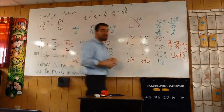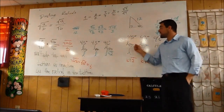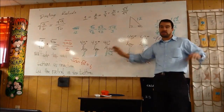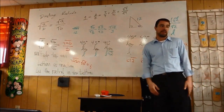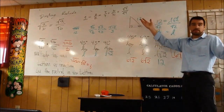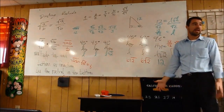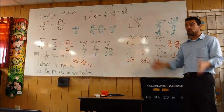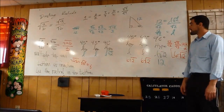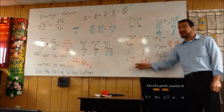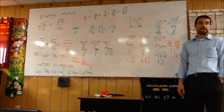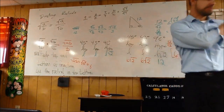Do not get into the habit of thinking that in 45-45-90 triangles the hypotenuse is always going to have a square root of 2 in it — that's not the case at all. Here, the hypotenuse is a whole number. That happens when you have a right isosceles triangle whose hypotenuse is a whole number. When the hypotenuse is a whole number, the legs are going to have the square root of 2 involved. Let's take a little break and we'll be right back.